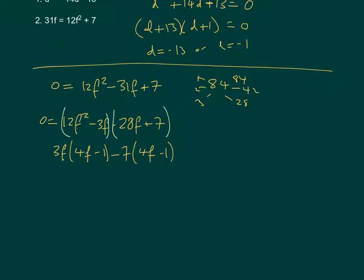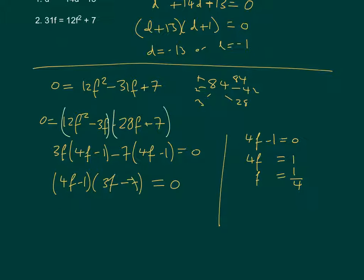So we'll have 4f minus 1 times 3f minus 7. And remember, all of these steps equals 0. So finally, we can say that 4f minus 1 equals 0, or 3f minus 7 equals 0. So we'll have 4f equals 1, so f is a quarter. Or we have 3f minus 7 equals 0, so 3f equals 7, so f equals 7 over 3. And that's our second solution there.